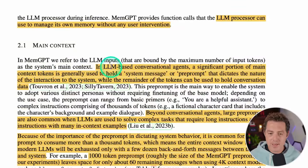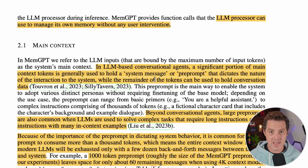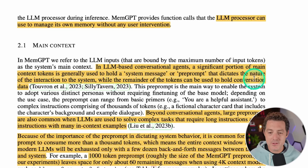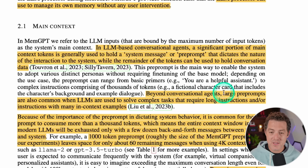In LLM-based conversational agents, a significant portion of main context tokens is used to hold a system message — telling the large language model how to behave, what personality or role to take on — and the pre-prompt that dictates the nature of the interaction. When you get into more complex tasks like coding, larger pre-prompts are also very common. If you need to prompt the LLM with a codebase so it has context of that entire codebase, it's basically not possible for any decently sized codebase.